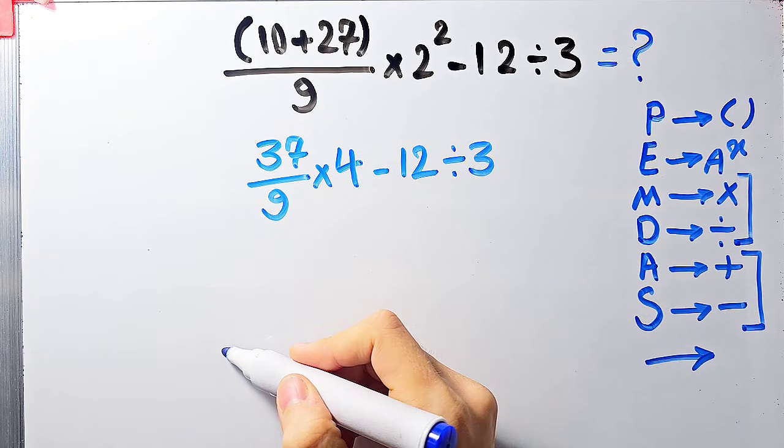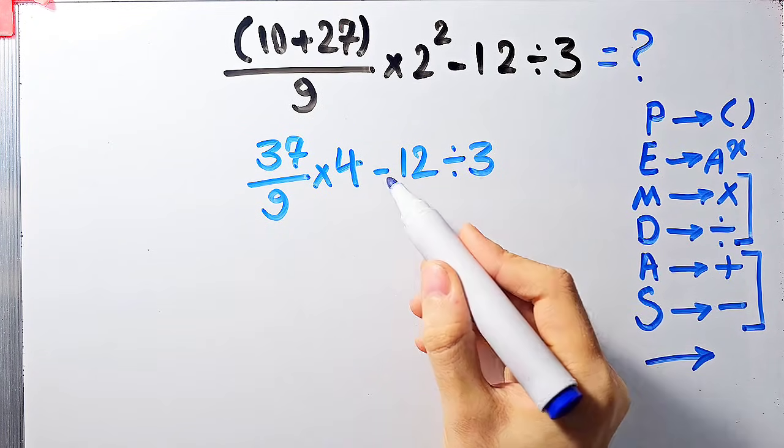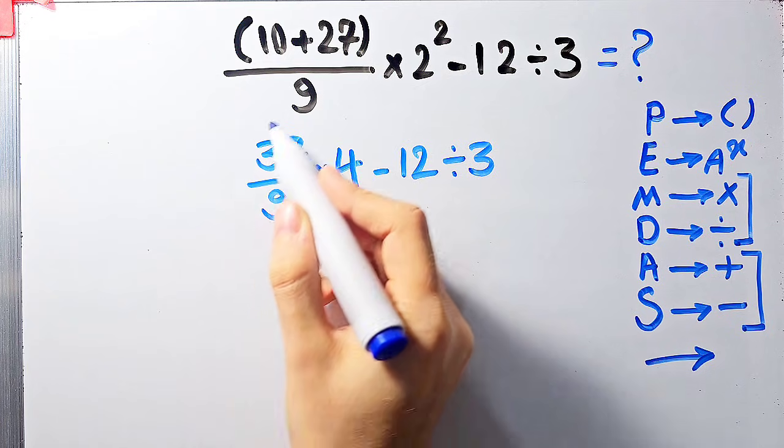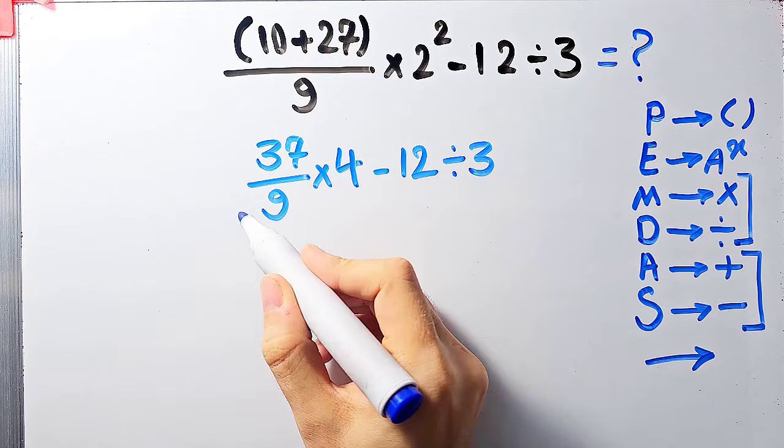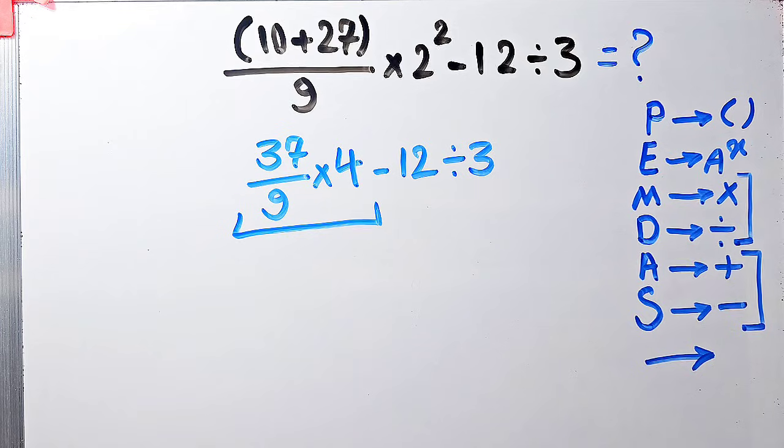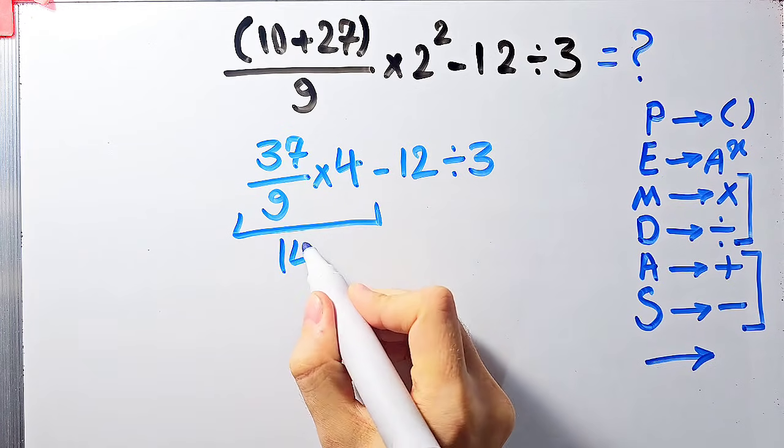First we simplify this multiplication: 37 over 9 times 4 equals 148 over 9. Now the question is 148 over 9 minus 12 divided by 3.